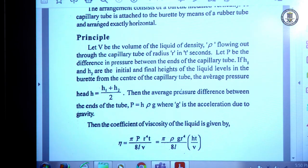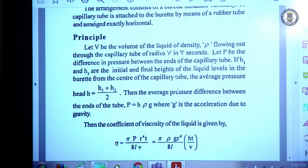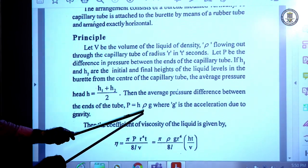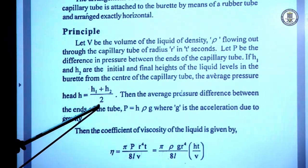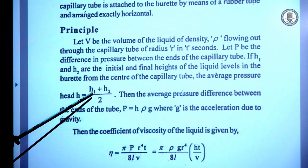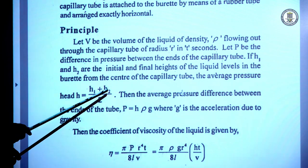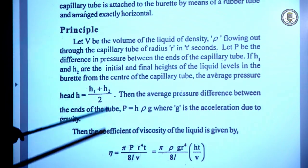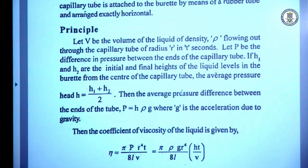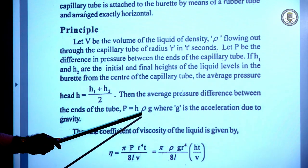Coming to the principle of the variable pressure head method: to find viscosity, the pressure head through which the liquid is flowing is calculated using the formula P = H·ρ·g, where H is given by (H1 + H2)/2. H1 is the height of the liquid column from the capillary tube initially, and H2 is the level up to which the liquid flows. So (H1 + H2)/2 is the average pressure head, and P = H·ρ·g.